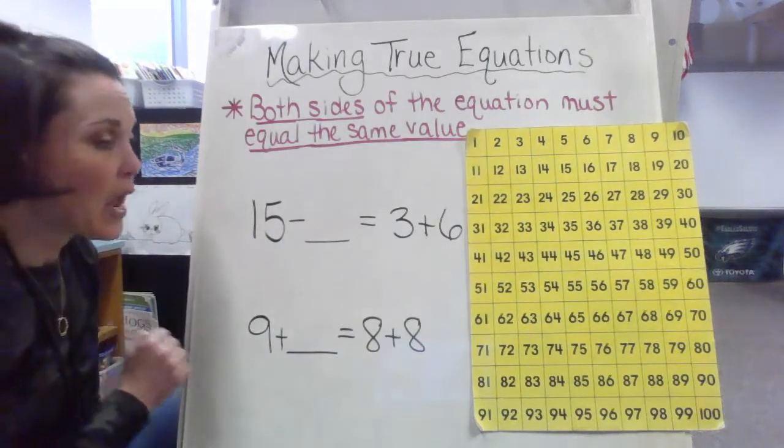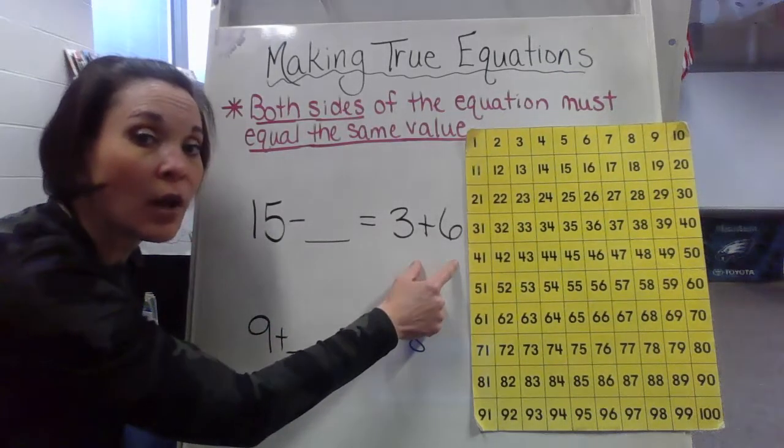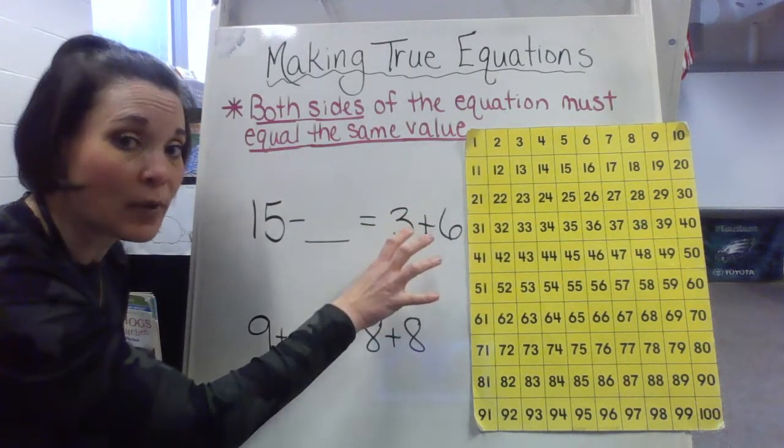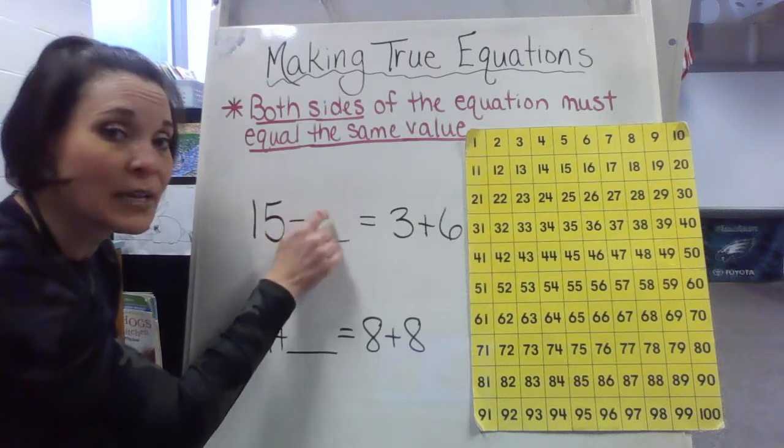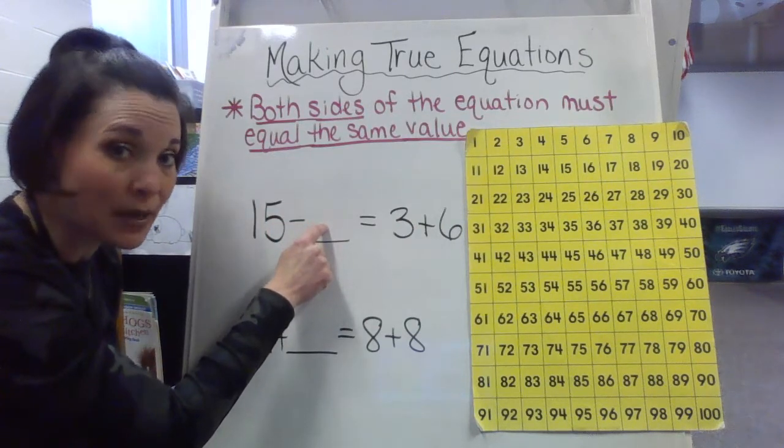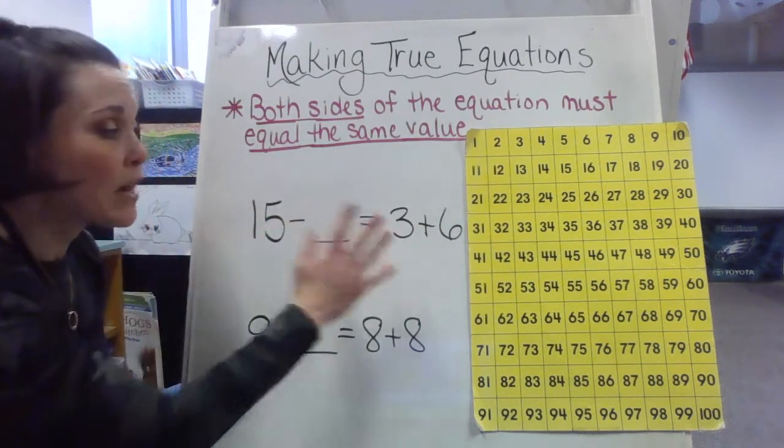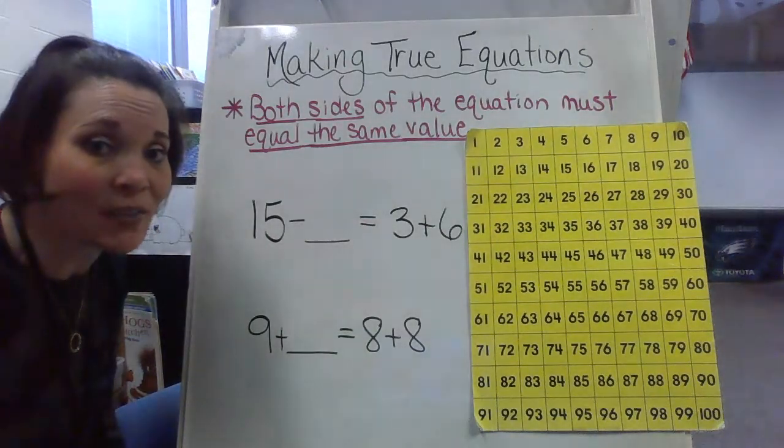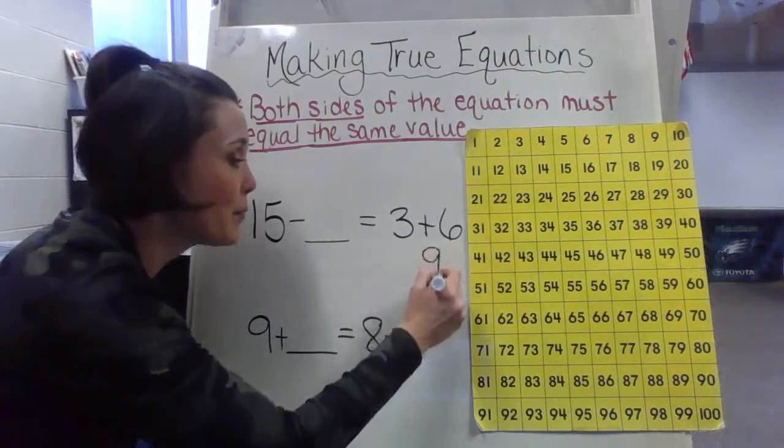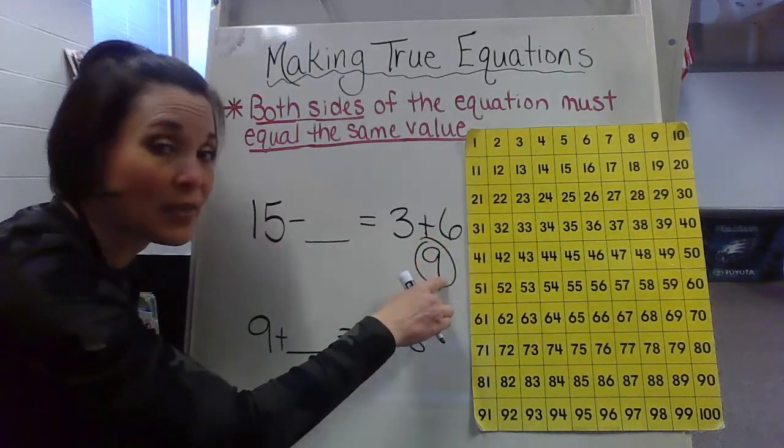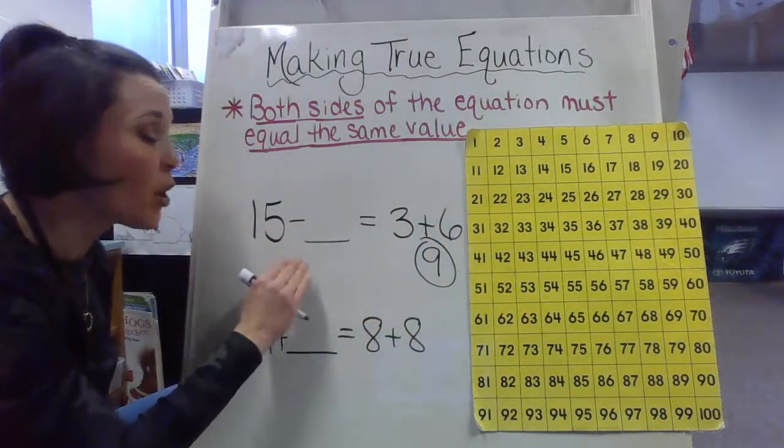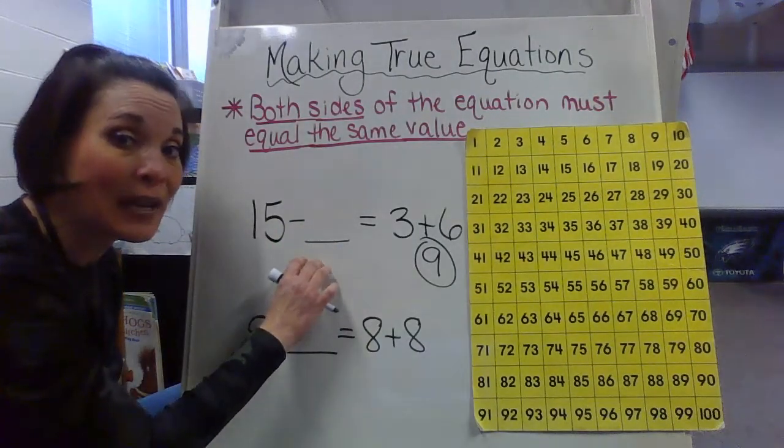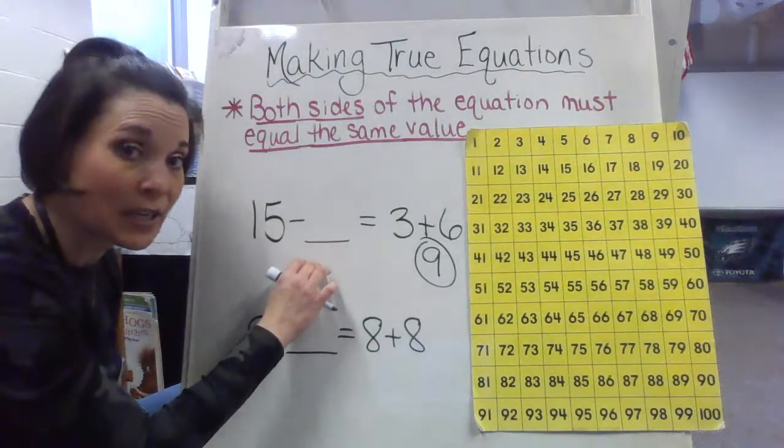First thing I want to do, I want to figure out the number sentence that is already fully there because then that's going to help me figure out what is going to be missing in this spot. So we have 3 plus 6. 3 plus 6 that's an easy peasy basic fact that is going to be 9. So that's the answer on this side. So my end result here is not going to be 9 here in the missing part. It should end up being 9 here as my answer.